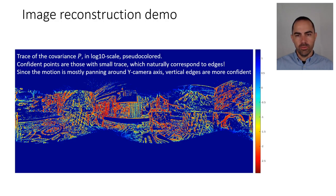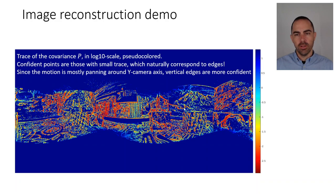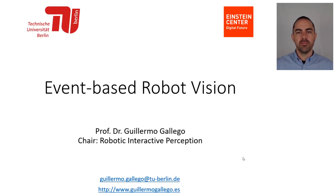The result shows the gradient in the x-direction, the gradient in the y-direction, and combining these two into magnitude and orientation using color in a single plot. This is the reconstructed map in log brightness — before taking the exponential. The trace of the covariance of all pixels in the mosaic is shown in log scale. Since motion here is mostly panning around the vertical camera axis, vertical edges are more confident than horizontal edges — you can see a vertical edge is more confident than a horizontal edge. And that's it for this quite interesting algorithm focused on the image reconstruction part.